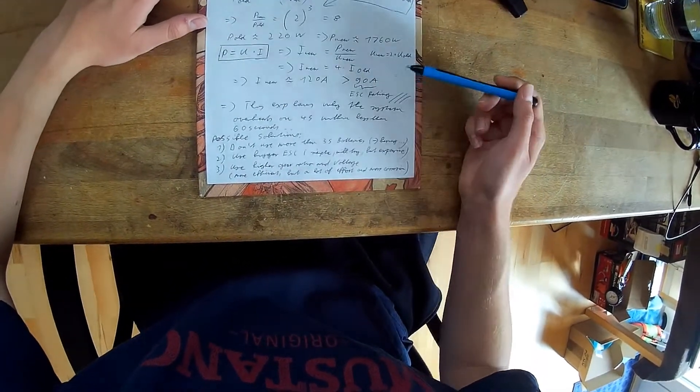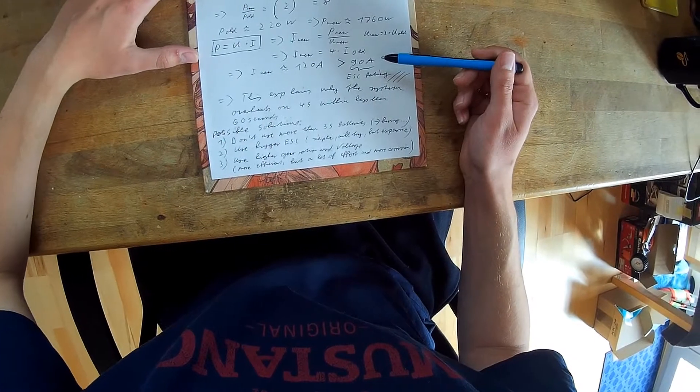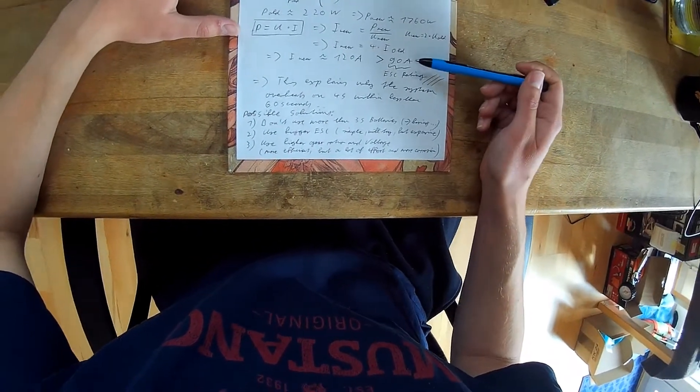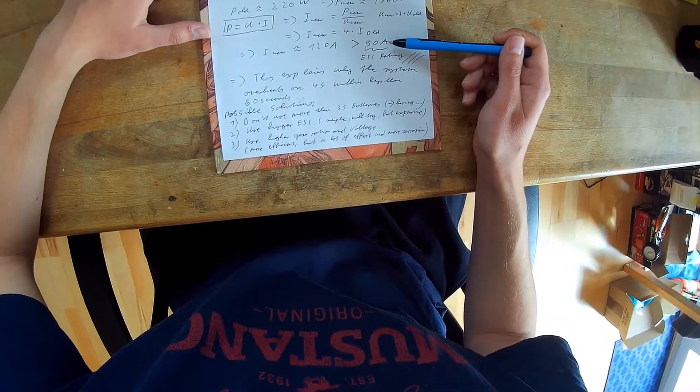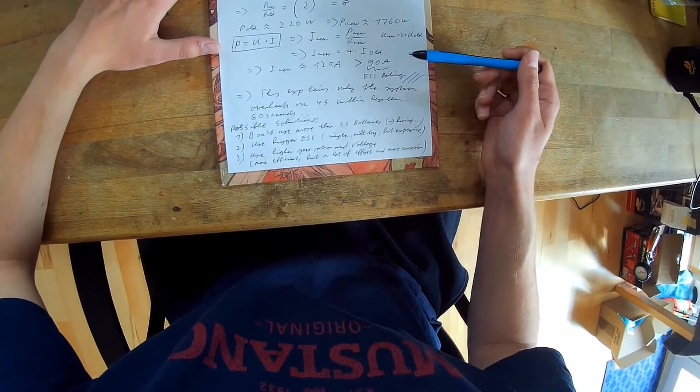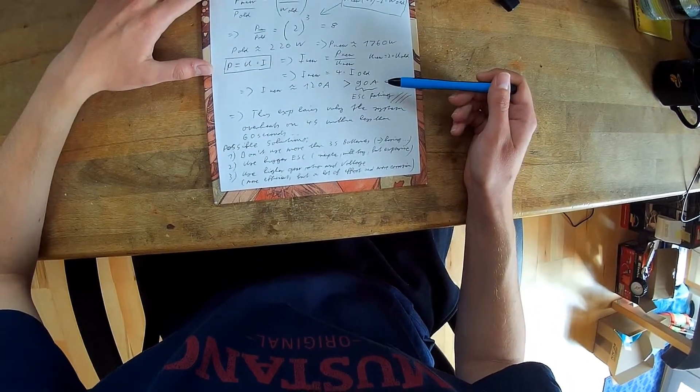And 120 amps is obviously more than what the ESC is rated for, because it's only rated for 90 amps continuous and that is only when it gets continuous cooling.